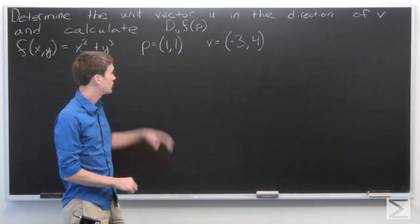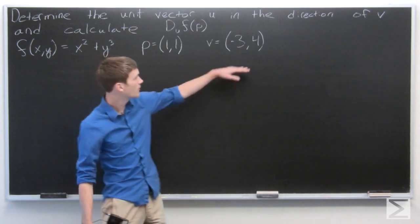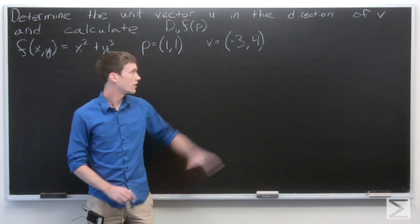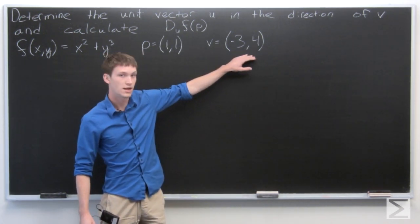The point we want to calculate it at is p equals (1, 1), and the direction of the vector is going to be v = (-3, 4).